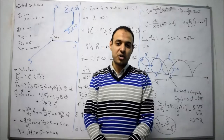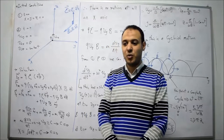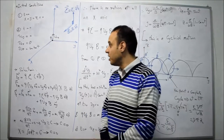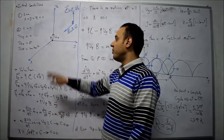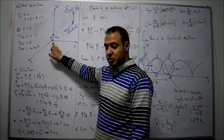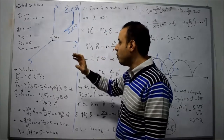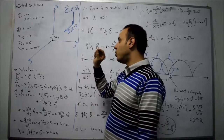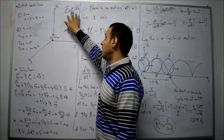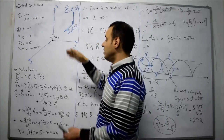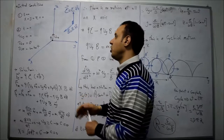Welcome back to the Electronics course. Today we have another problem. We have a charged particle at the origin, but now there are two fields: a magnetic field and an electric field that are perpendicular to each other.